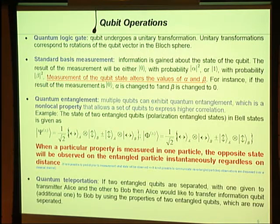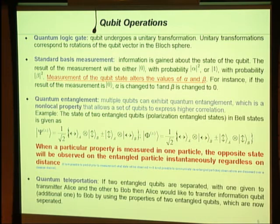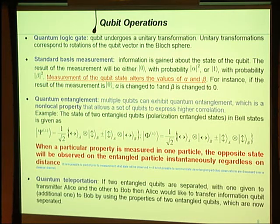What can be done with qubits? We can construct quantum logic gates, which are the basic entity for quantum computation — a kind of unitary transformation of qubits around the Bloch sphere. We can also do measurement, which is key. It is not merely reading — it has an impact on quantum states. It could yield 0 with probability |alpha|² or 1 with probability |beta|². However, measuring alters the probabilities: if measurement gives 0, then the probability of 0 becomes 1 immediately. That is the well-known fact from quantum mechanics.